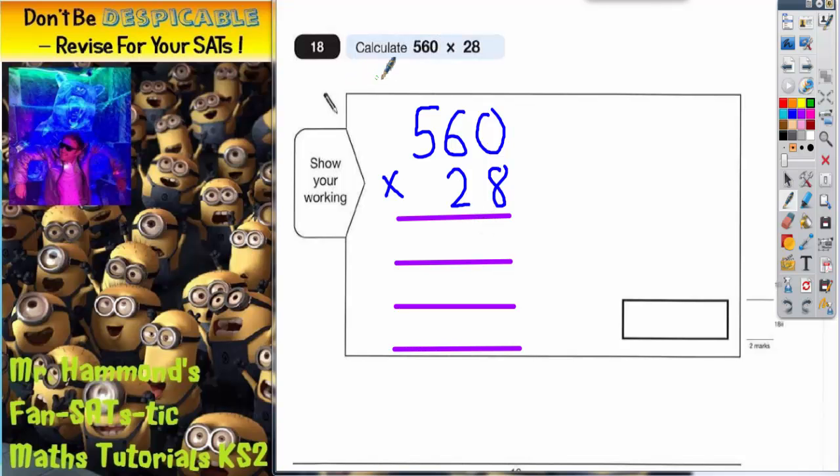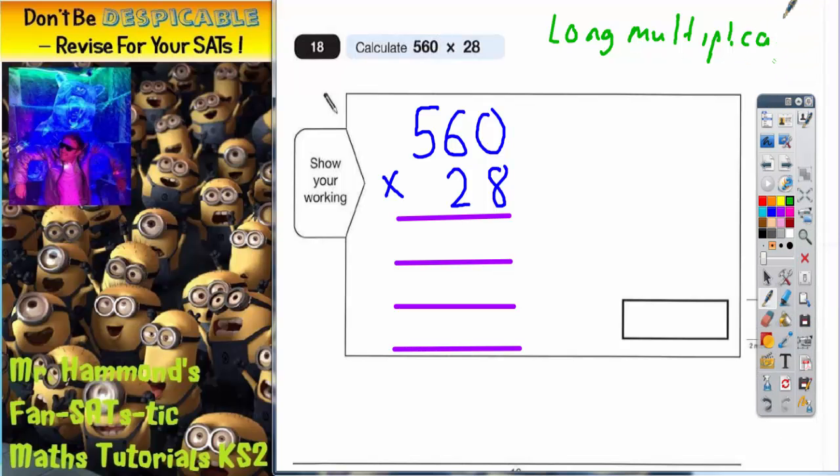Question 18 says calculate 560 times 28. This is a bit of long multiplication and we're going to use the magic zero method, which will become clear in a moment. First of all, this is how you need to set it out in the correct columns, and you're going to need three lines of working out.